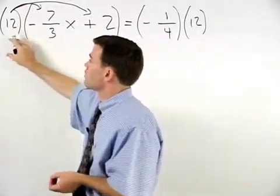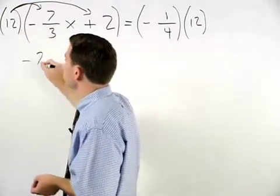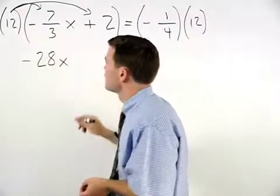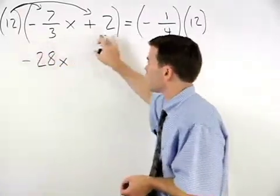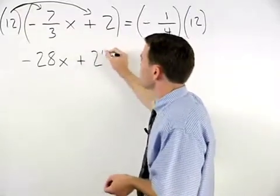So we have 4 times negative 7x, which is negative 28x. 12 times positive 2 is positive 24.